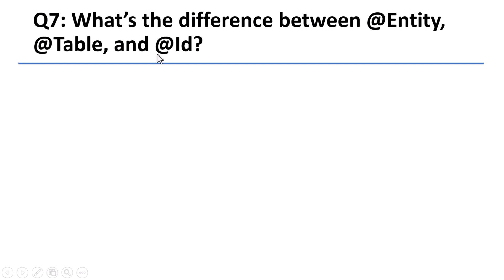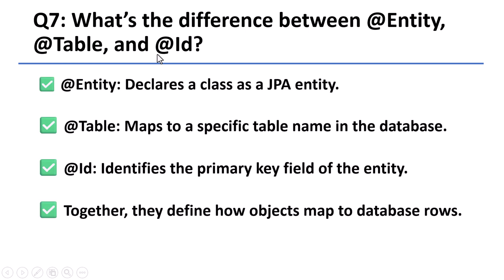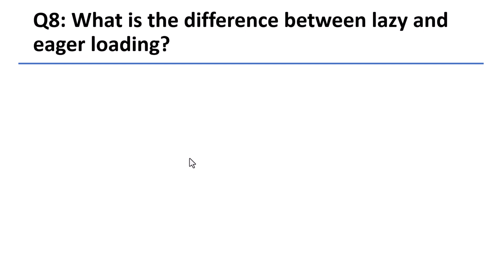It's especially useful for building APIs or admin dashboards that deal with large datasets. Question 7: What's the difference between @Entity, @Table, and @Id? These annotations are part of JPA and are used to map Java classes to database tables. @Entity marks a class as a JPA entity, @Table lets you specify the name of the database table, and @Id marks the primary key of the entity.